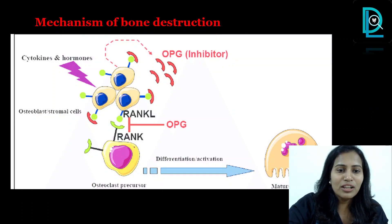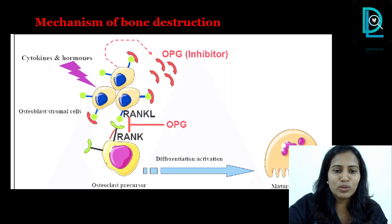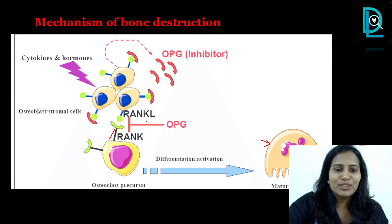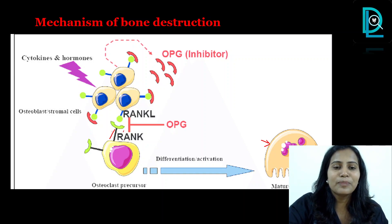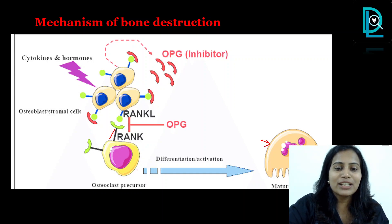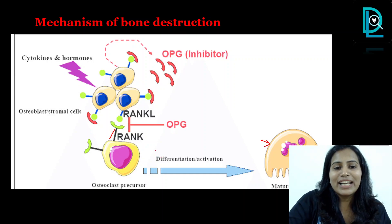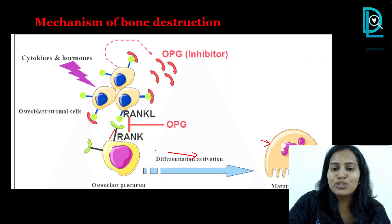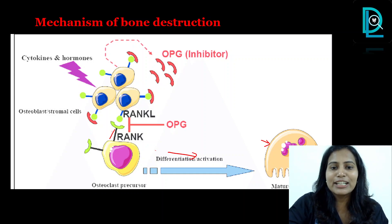You can see the presence of RANK expressed on the surface of this osteoclast precursor. Then you can see a mature osteoclast here. When RANK-L binds to RANK, this osteoclast precursor cell gets activated, differentiates into a mature osteoclast, and leads to bone loss.